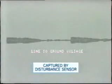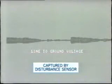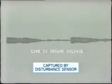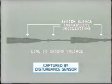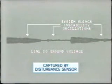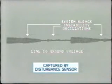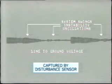Another type of sensor, the disturbance sensor, responds to slower changes in voltage, current, or even system frequency. These slower changes take place over many cycles and are commonly called system swings, instability, or oscillations.